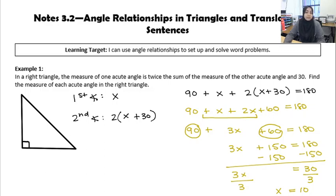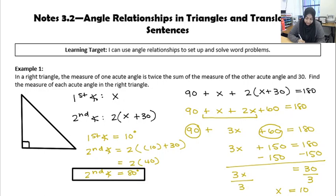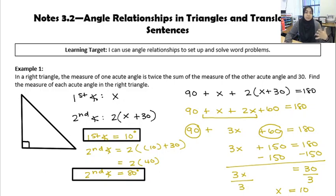I'm not done though, because it didn't say solve for X. It said find the measure of each acute angle in the right triangle. I can't get those angle measures until I know the value of X. Now that I have X, I can substitute into my measures and find my final answers. The first angle equals X, which means the first angle is 10 degrees. The second angle: 2 times (10 plus 30) equals 2 times 40, so the second angle is 80 degrees. Notice 80 plus 10 is 90 — a good way to check that my setup is correct.